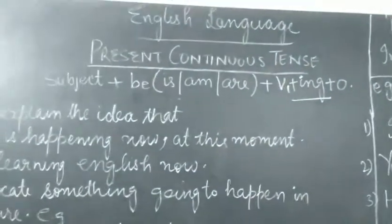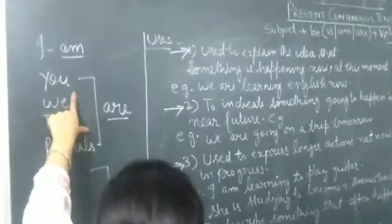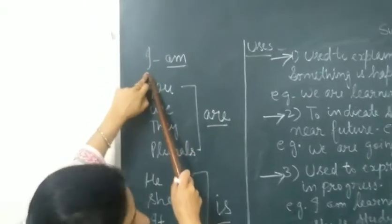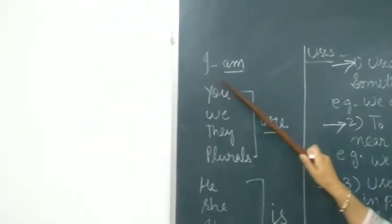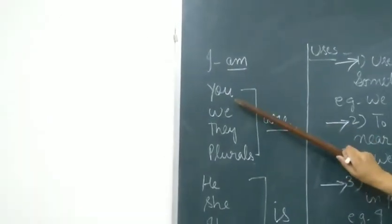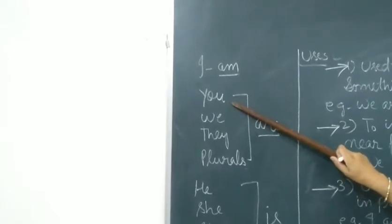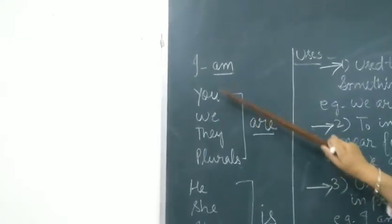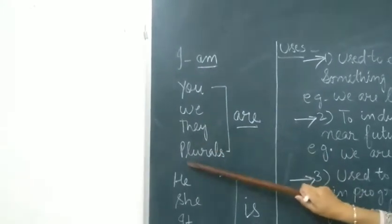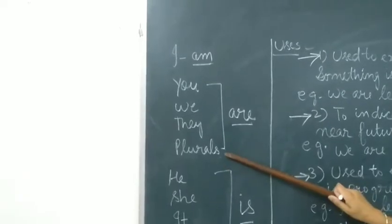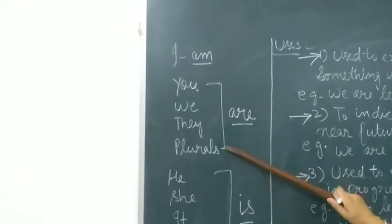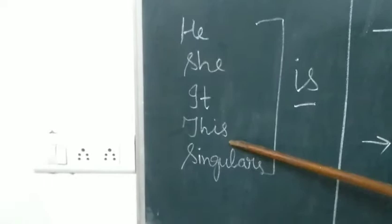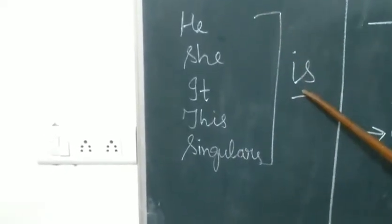Now before we start further, I want all of you to be clear with the usage of subject according to the helping verb. Like which helping verb should be used with the subject here. If I is there, first person I, then with I we have to use am. And if we are using you, you is the second person as I told you in my previous video. We is the plural of first person. They is the plural of third person. Then another plural, it can be boys, the students. With that we use are. Then comes third person, he, she, it, this or similar. With these terms, we will use is.